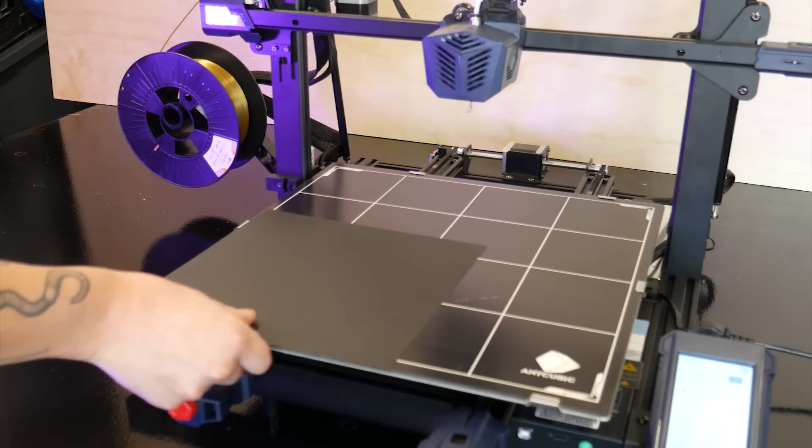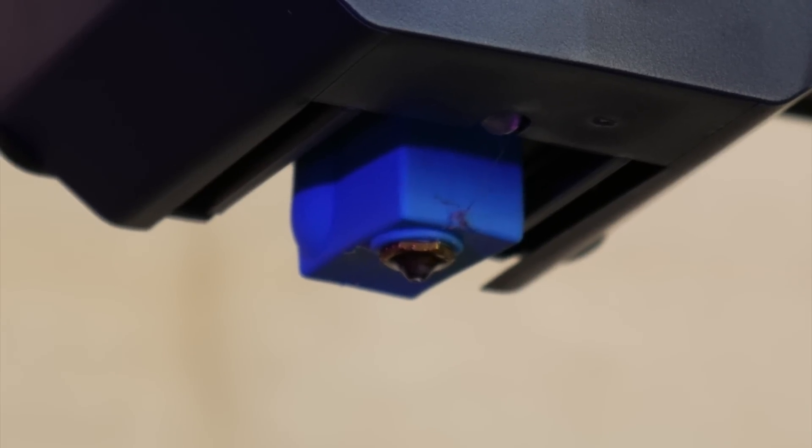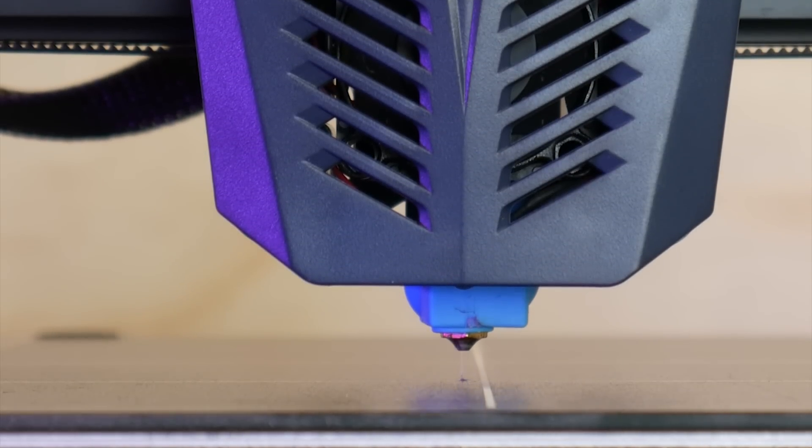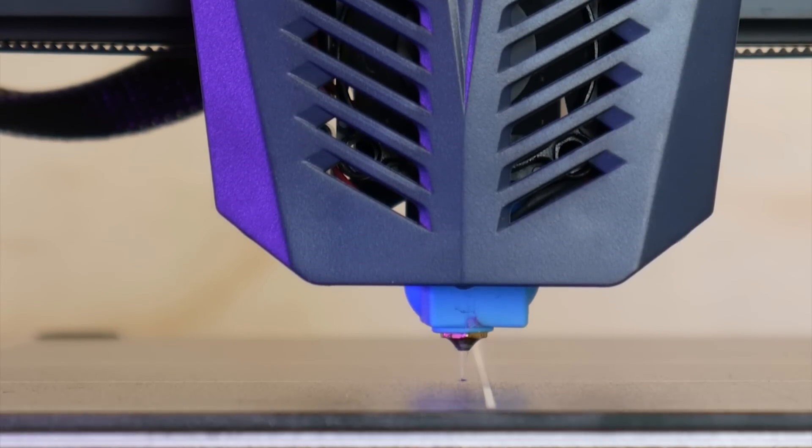Here's the bed from an Ender-3 for comparison. It comes equipped with a Volcano-style hotend for great volumetric flow rates and fully automatic bed leveling. Turning knobs and sliding paper under your hotend is becoming a thing of the past and I couldn't be happier.